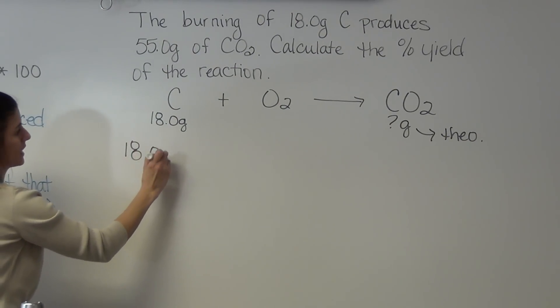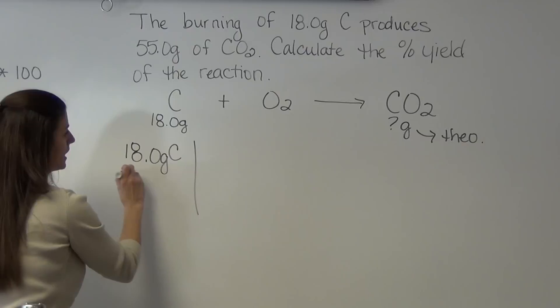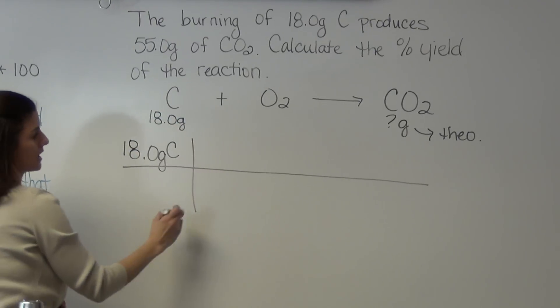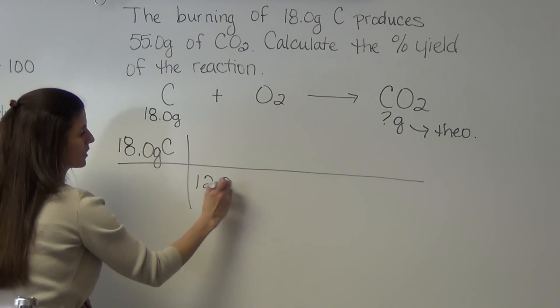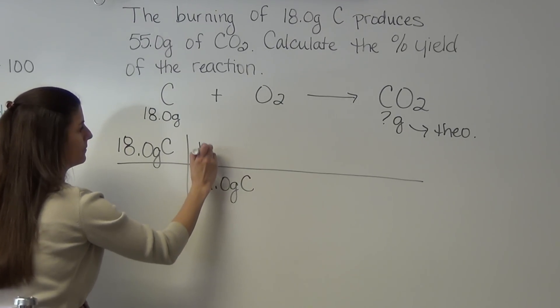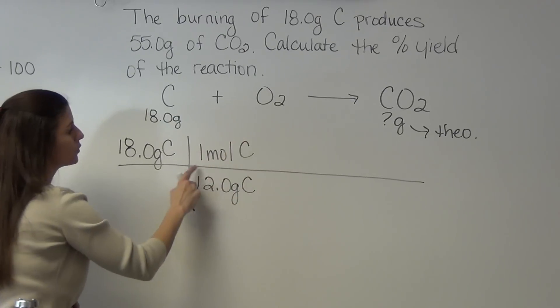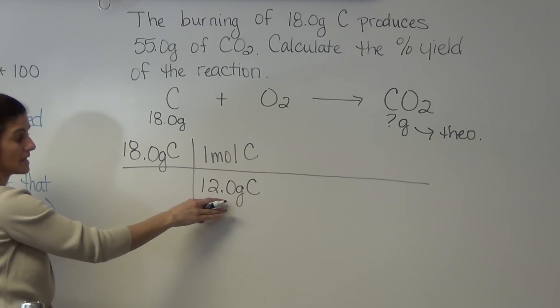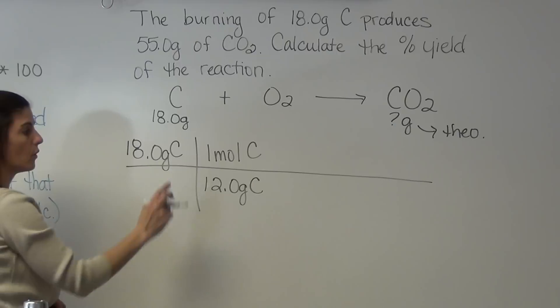18.0 grams of carbon, straight from carbon to carbon dioxide. 12.0 grams of carbon is one mole of carbon. And remember, this is always going to be a one. Any time you get mass off the periodic table, it's always one mole.